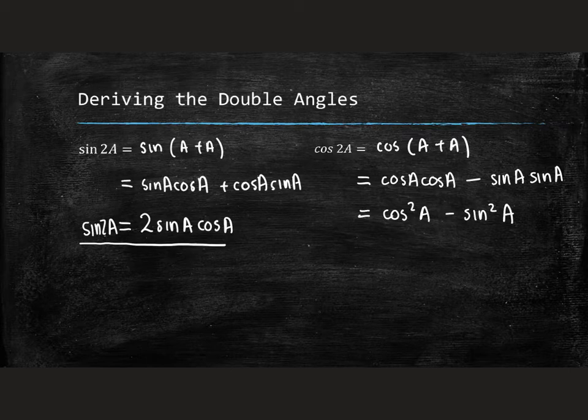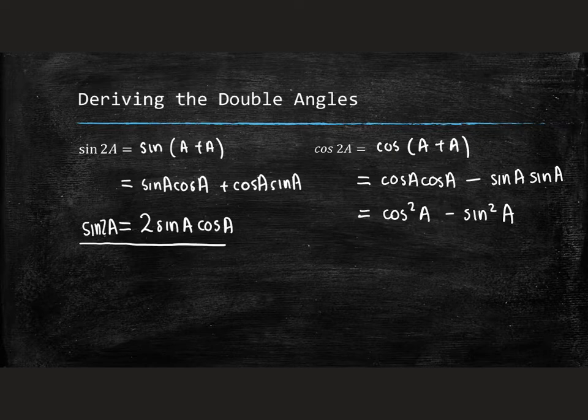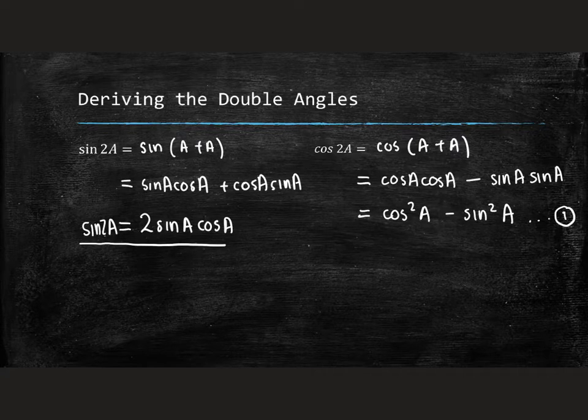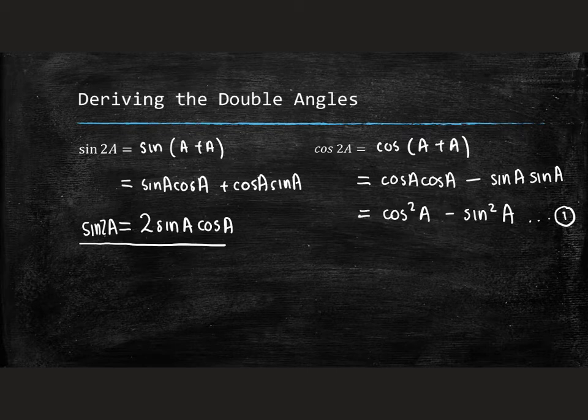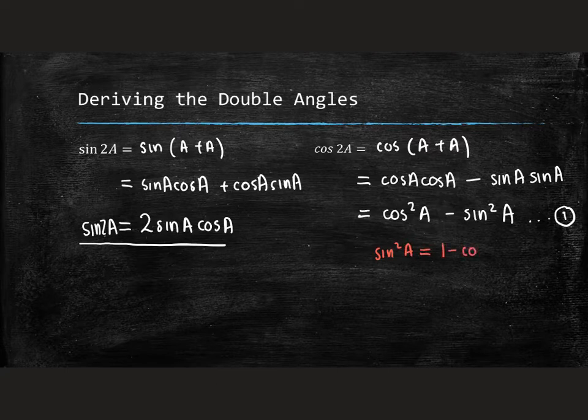But you would remember back from the grade eleven work that the squares can be written in other forms. So I'm going to call this form one. But what happens if I rewrote the cos squared into another name? So if we go back to our grade eleven concepts, sin squared is equal to 1 minus cos squared.